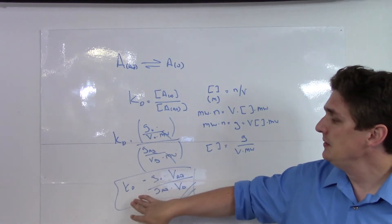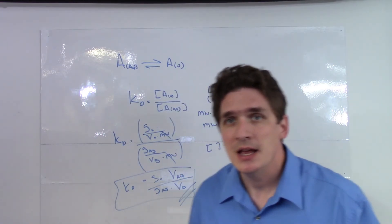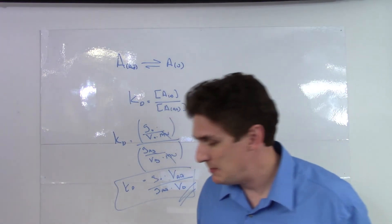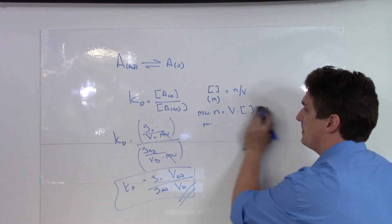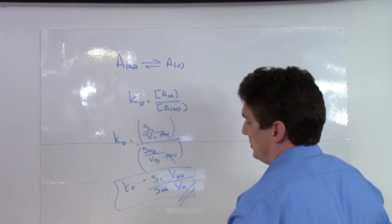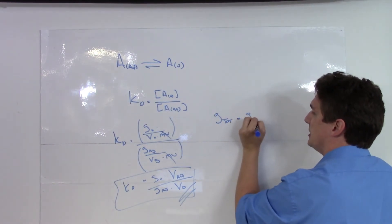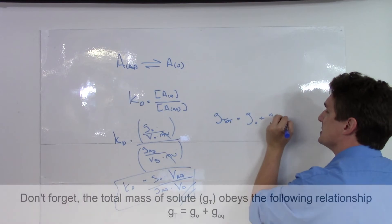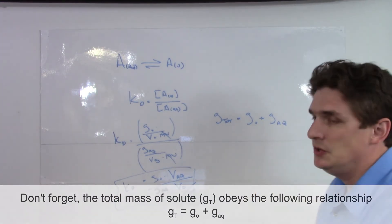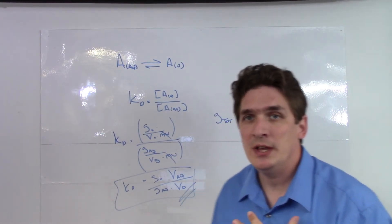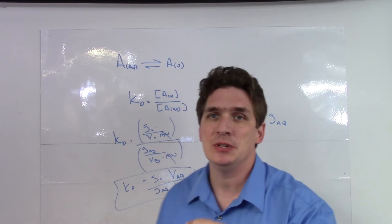So if we have the volume of our two aqueous phases, and we know how many grams we put in, we have the further relationship that the total grams equals the grams of the organic phase plus the grams of the aqueous phase.